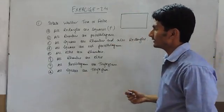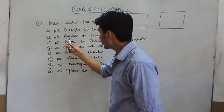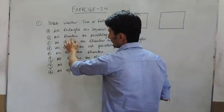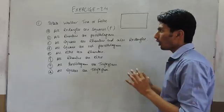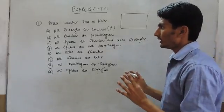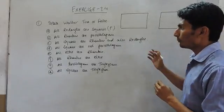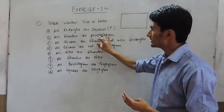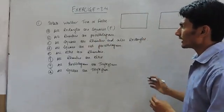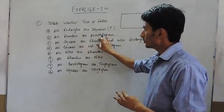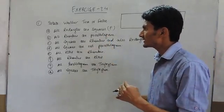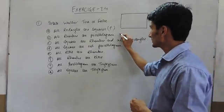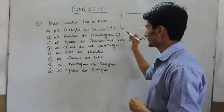In the second statement, whether all rhombuses are parallelograms. We know that a rhombus is a figure having all sides equal and its opposite sides are parallel and equal. Same case with parallelogram — a parallelogram is also a figure whose opposite sides are parallel and equal. So this is a true statement.